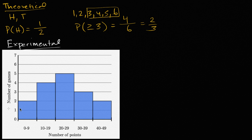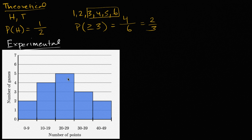For example, let's say you have data from your football team, a couple or many games into the season, and you've been tabulating the number of points. You have a histogram: two games scored between 0 and 9 points, four games scored between 10 and 19 points, five games scored between 20 and 29 points, three games scored between 30 and 39 points, and two games scored between 40 and 49 points.